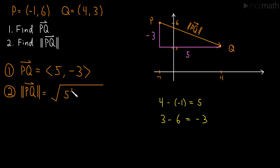So by the Pythagorean theorem, we get that this length is the square root of 5² + (-3)², which is 25 + 9, which gives us √34. So the length of PQ is √34, and we've answered both their questions.